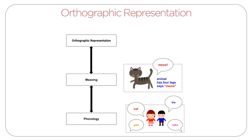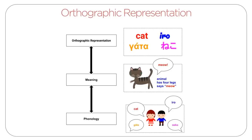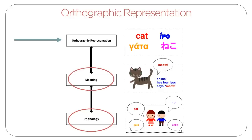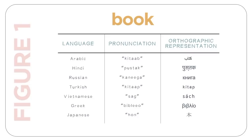When we learn to read, we connect words we know to visual patterns in our script. All words we can read have a certain look that we get used to and recognize over time. Orthographic representation is at the third level in our model — phonology is at the base, meaning connects onto sound when we learn a language, and orthographic representation is at the top. As seen in Figure 1, languages around the world use different scripts: some use letters like English, some use more complex visual symbols like Hindi. In Module 2, we will see how orthographic representations vary across different scripts or writing systems.